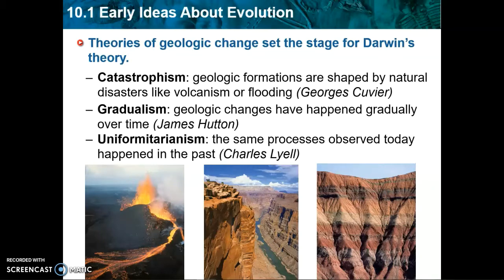Some really important geologists also contributed to the theory of biological evolution, because in geology scientists had already been studying how changes occur very slowly over time. Their ideas provided evidence and frameworks for how biological evolution could occur. The first geologic idea is catastrophism — the idea that geologic formations are shaped by natural disasters. If a volcano or a mass flooding event could change geologic formations, then certainly the environment could shape living species as well.